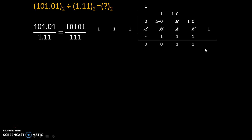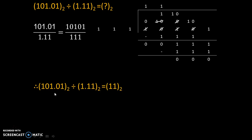We take that 1 as it is. Then 111 multiplied by 1 gives us 111 again. Subtracting those values gives remainder equal to 0. So our quotient answer is 11. Therefore, 10101 base 2 divided by 1011 base 2 equals 11 base 2.